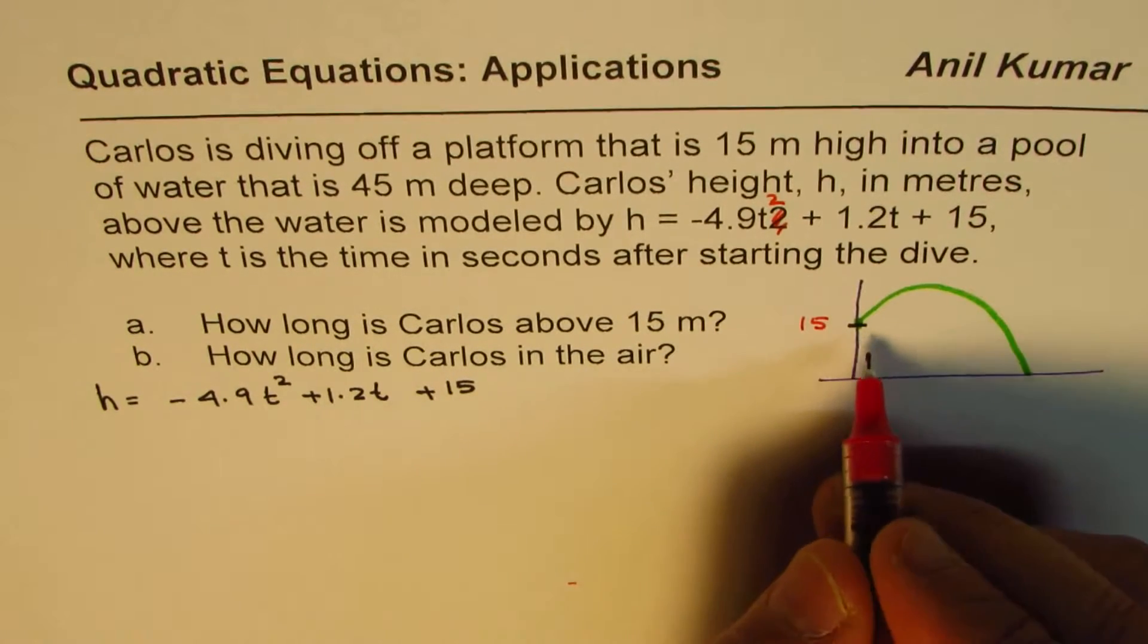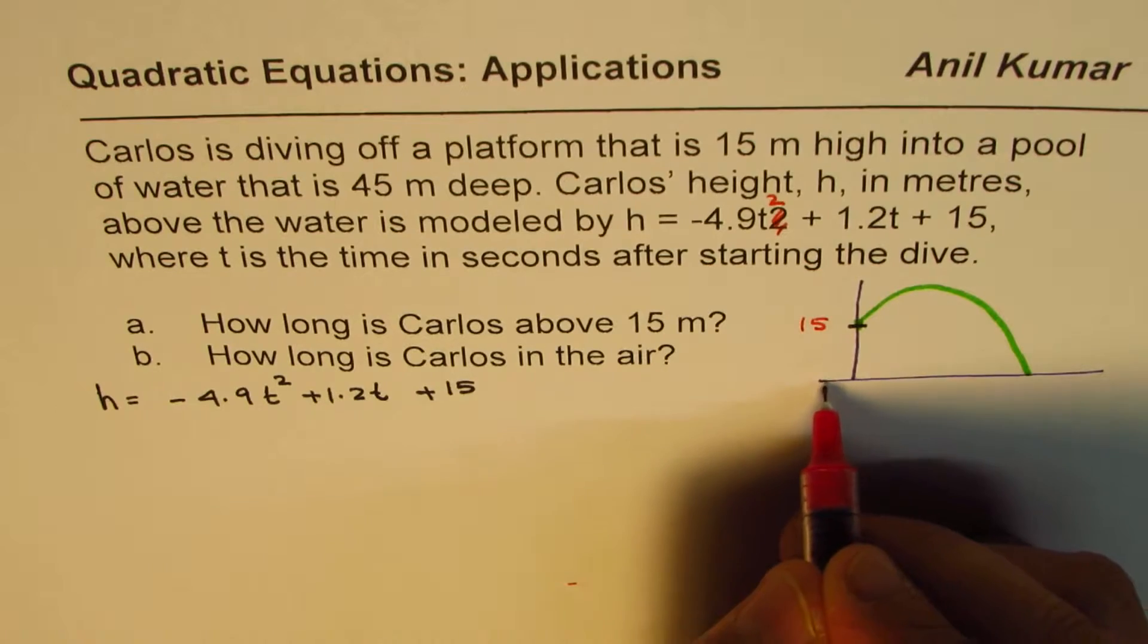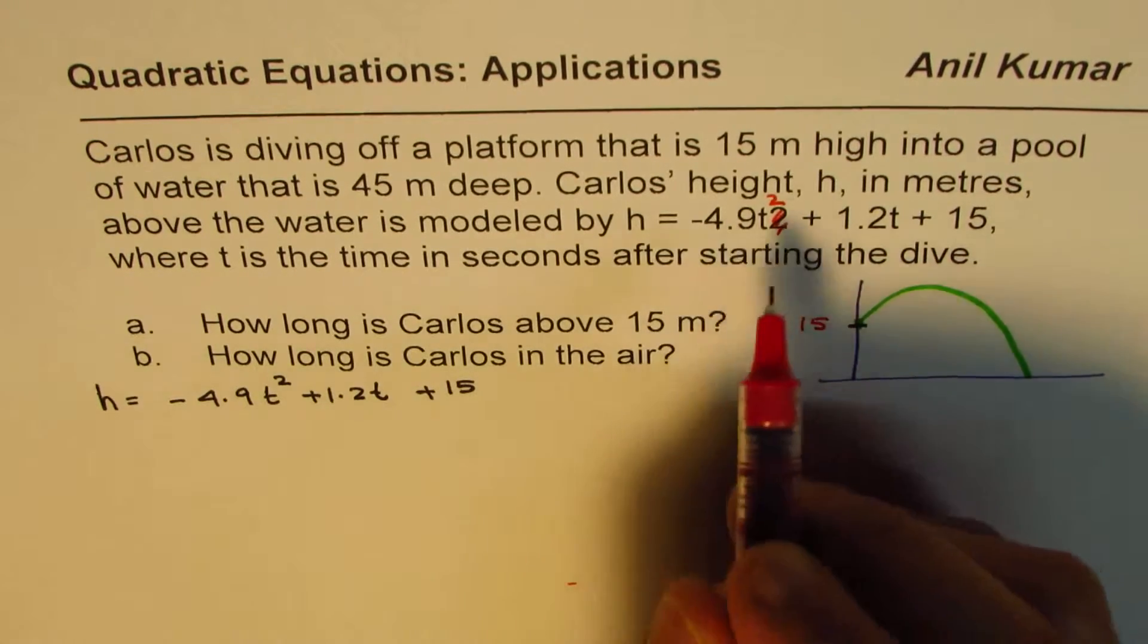If t is 0, h is 15. So that means this point here is at 15. The diving board is 15 meters above the level of the pool.